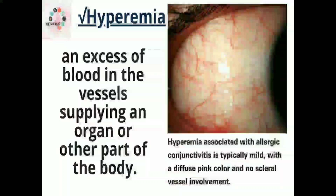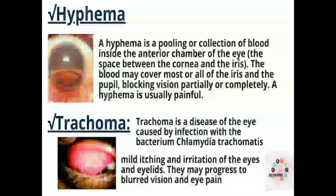Next is hyperemia — an excess of blood in the vessels supplying an organ or other part of the body. As you can see in the picture, hyperemia associated with allergic conjunctivitis is typically mild with a diffuse pink color and no scleral vessel involvement.